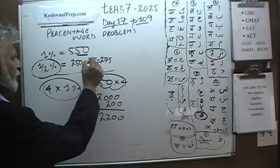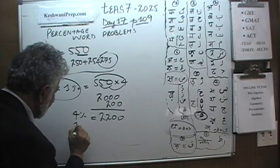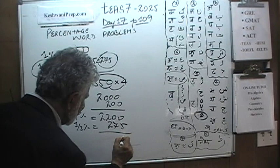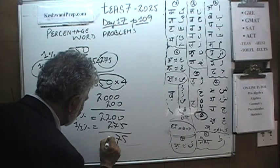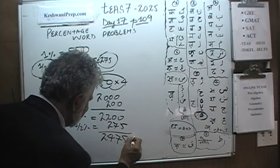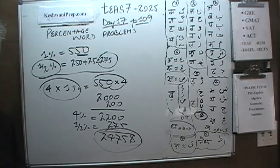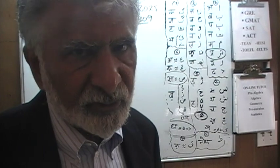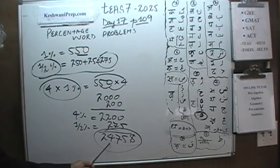We already know what half a percent is. Half a percent is 275. There we go, we have our answer. If our salary was increased by 4.5%, the answer is we just got a raise of $2,475.